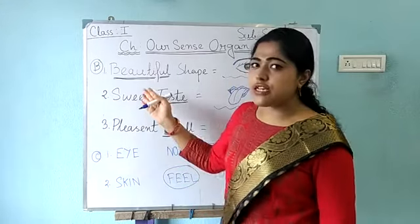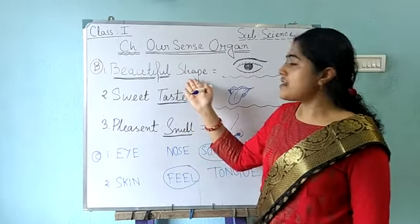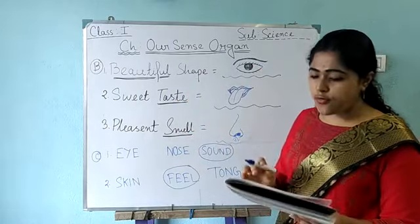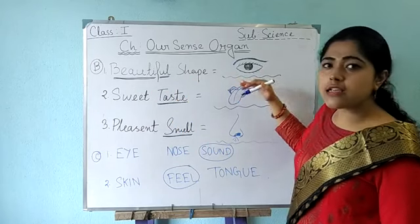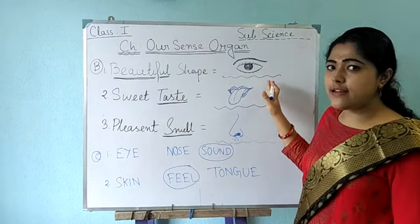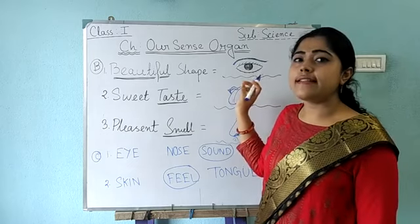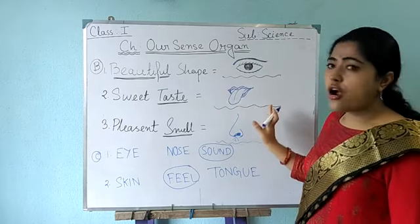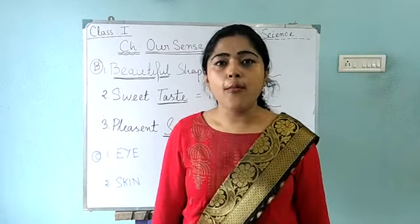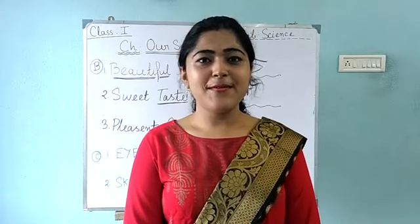Look at question number B and question number C in your book. There is a blank page in your book and I will draw there, but you have to write the name of each sense organ. Submit your homework. Thank you.